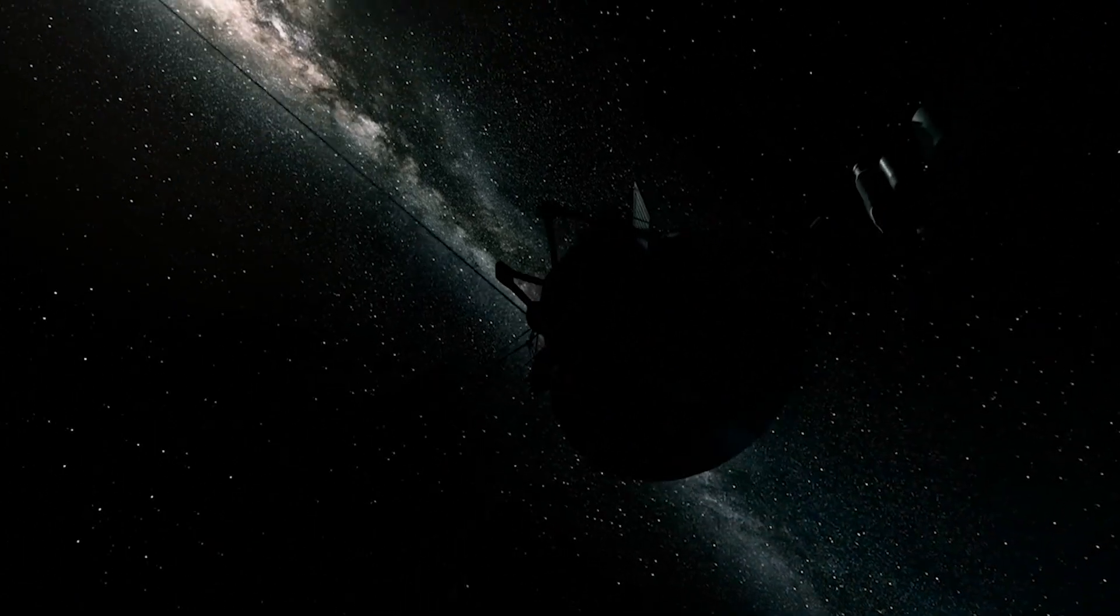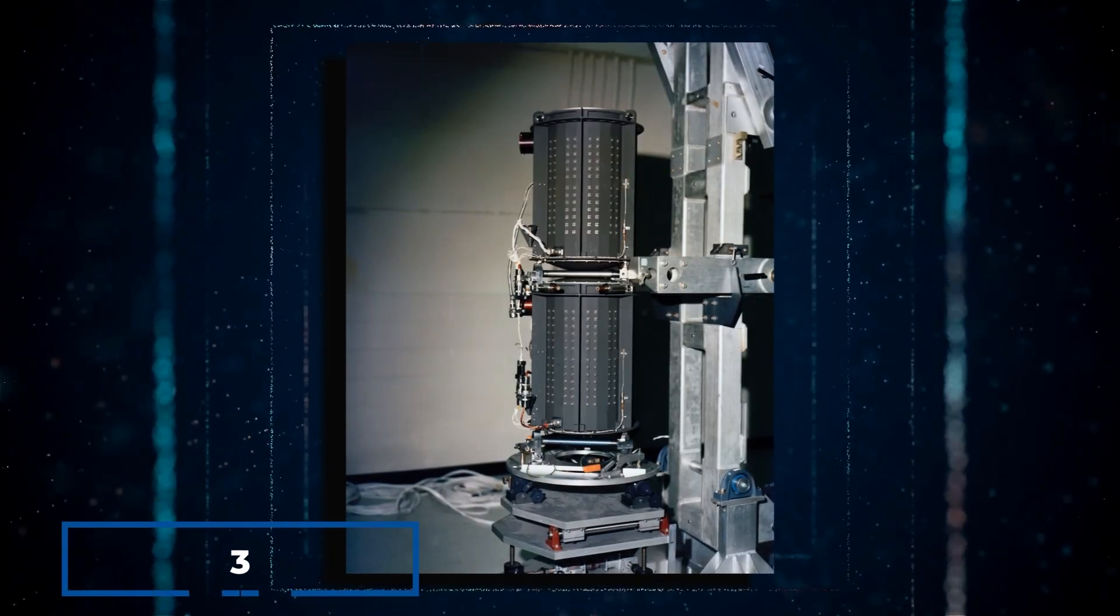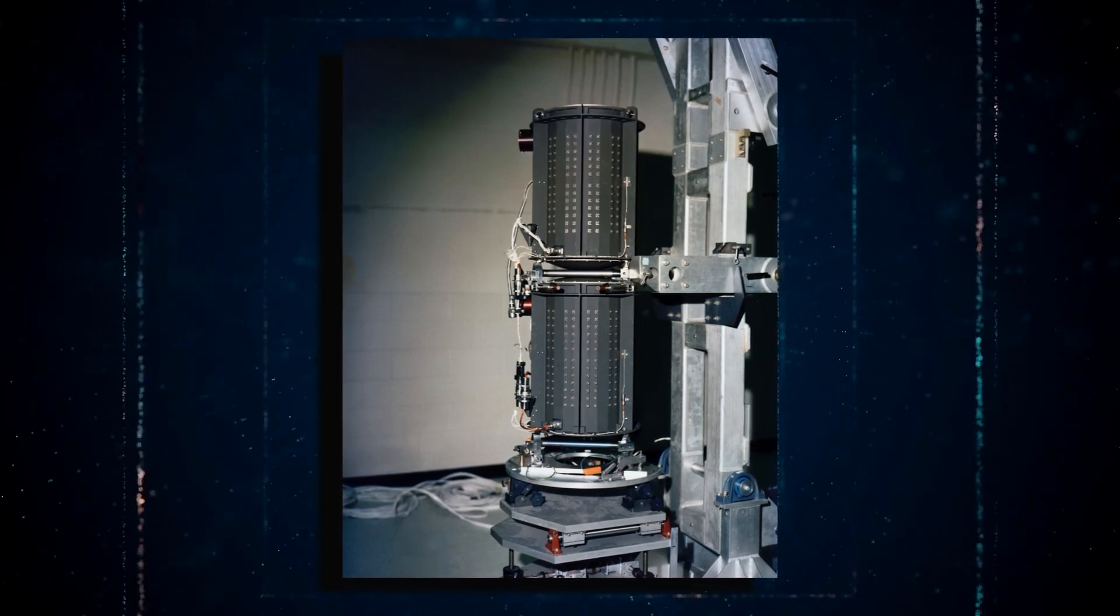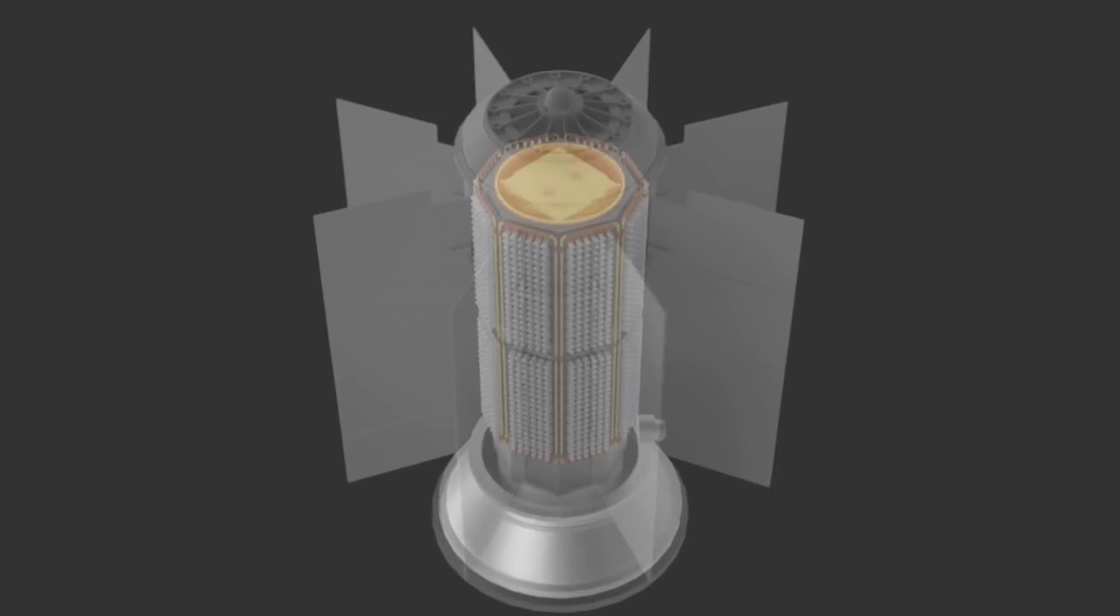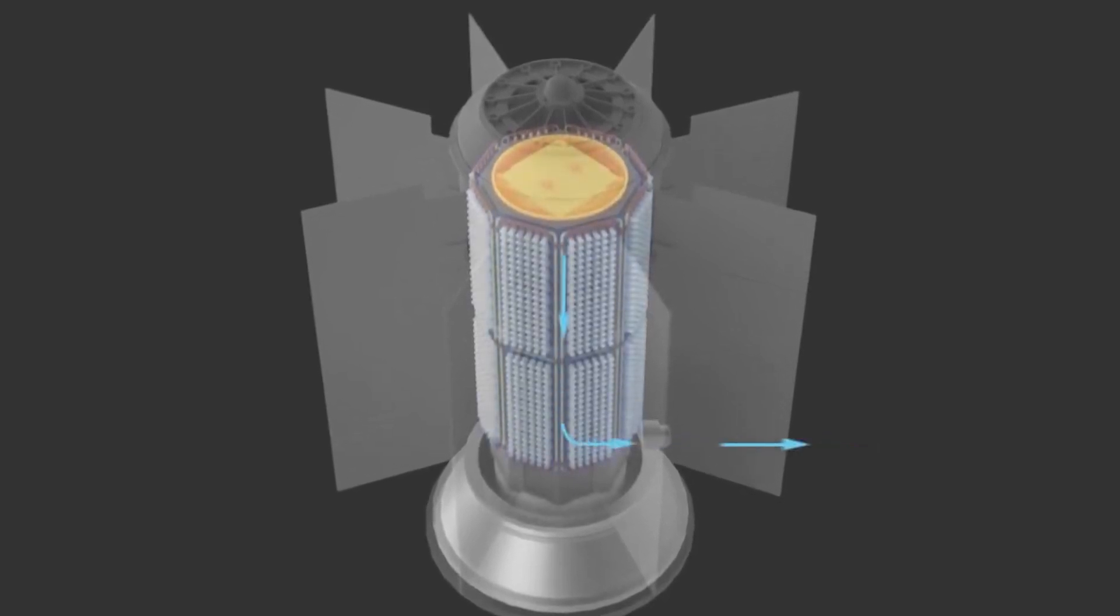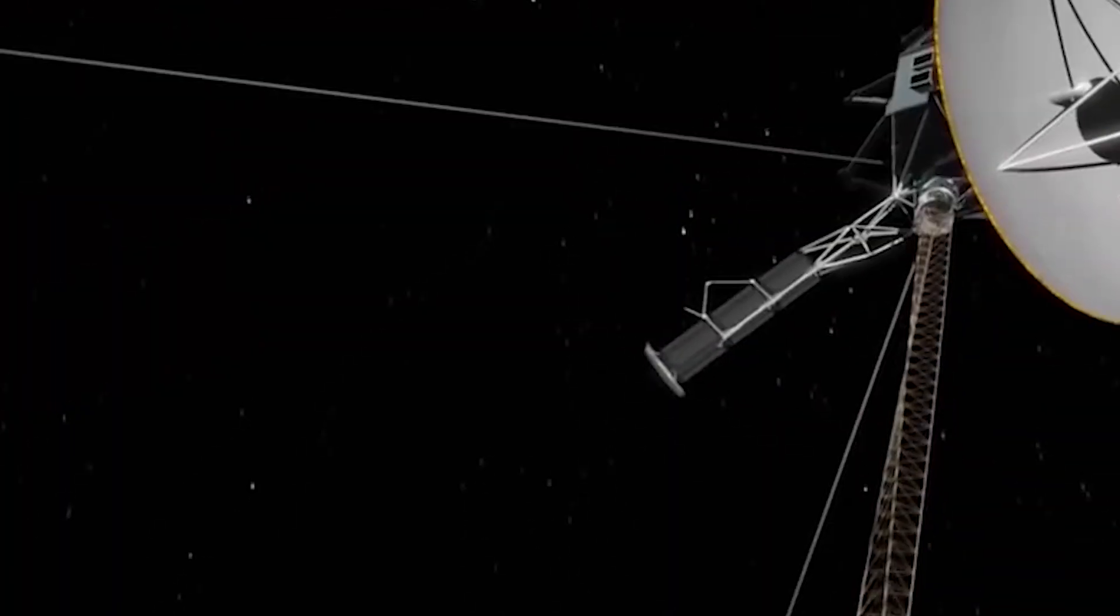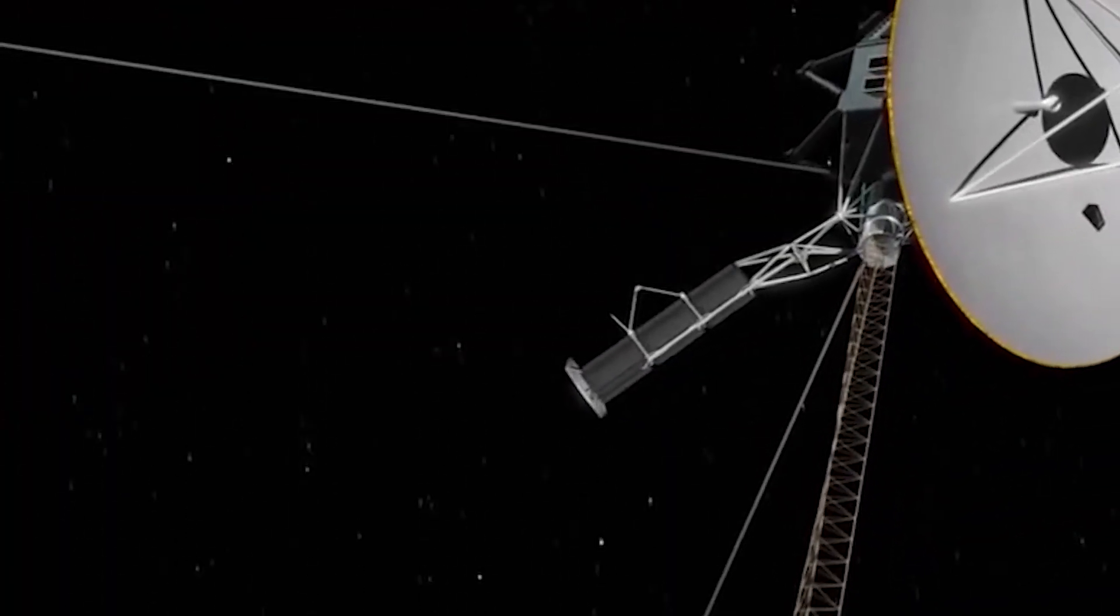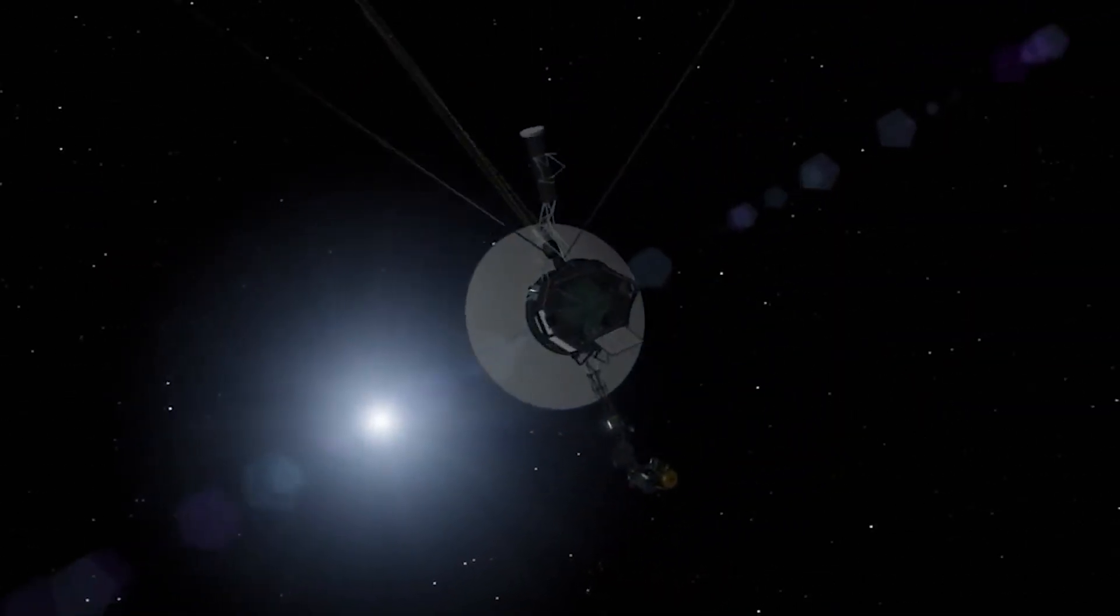As the spacecraft moved farther away from the sun, the amount of sunlight available to power its instruments diminished significantly. Voyager 1 relies on three radioisotope thermoelectric generators, or RTGs, to generate power. These generators convert the heat produced by the natural decay of plutonium-238 into electricity. However, over time, the declining heat output of the RTGs has led to a reduction in available power.